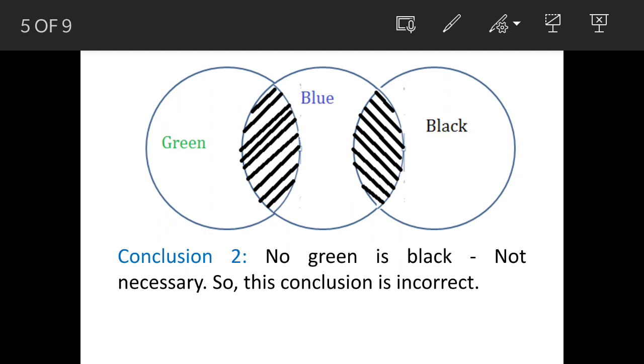The second conclusion. Now, no green is black. Now, no green is black is also a definite term because greens are present here, blues are present here and it is quite possible that some greens may, note the word may, may or may not be. So, this statement is actually not correct. So, hope it is clear.